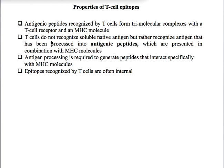T-cells do not recognize soluble native antigen. Instead, they recognize an antigen that has been processed into antigenic peptides and displayed by the MHC molecule, which can then be recognized by the T-cell receptor. Antigen processing is therefore involved to generate a peptide that interacts specifically with MHC molecules. Finally, the epitopes recognized by T-cell receptors are often internal.